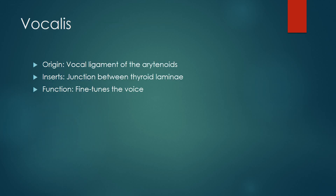The vocalis muscle originates from the vocal process of the arytenoids — and to clarify, that is the vocal process, not the vocal ligament — and it inserts on the junction between the thyroid laminae. It functions as a fine tuner for vocal production, allowing changes to the harmonics of the voice.